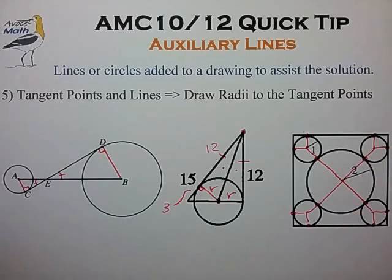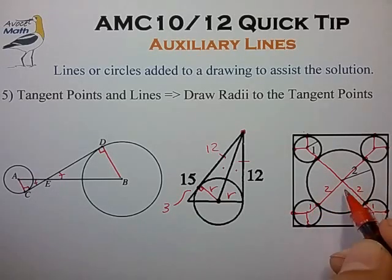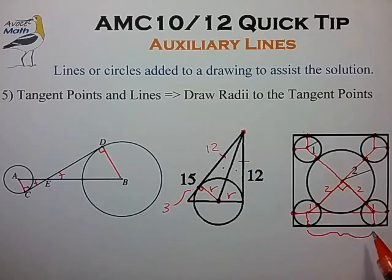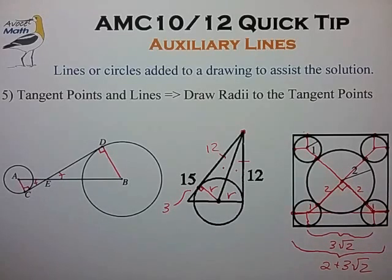It seems like in this question we're probably going to try to find the side length of the square. One way to do that is to add up the radii across this length here, and then create an isosceles right triangle, from which we can quickly find this length to be 3√2. Adding the two radii segments, we find that the total side length of the box is 2 + 3√2. A simple problem once you draw in some helpful auxiliary lines.